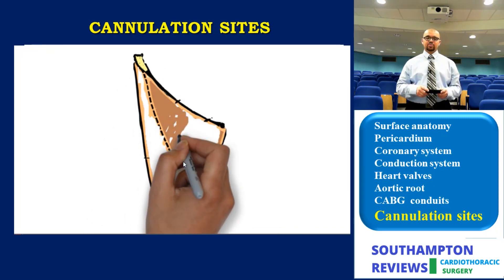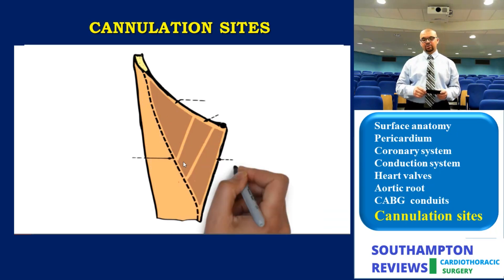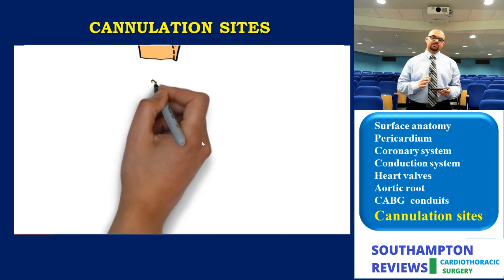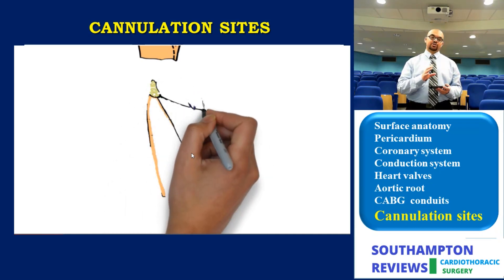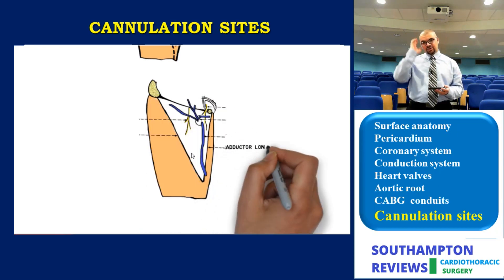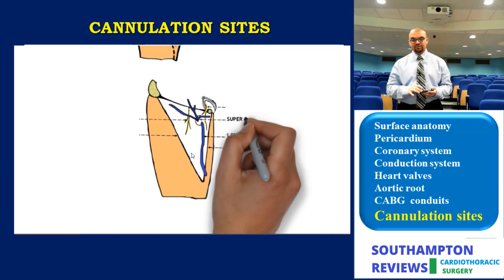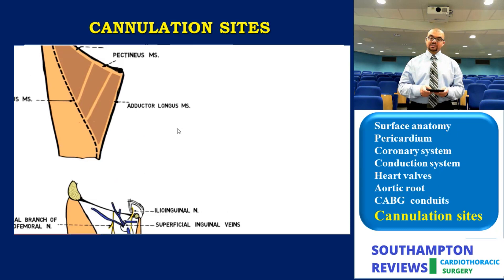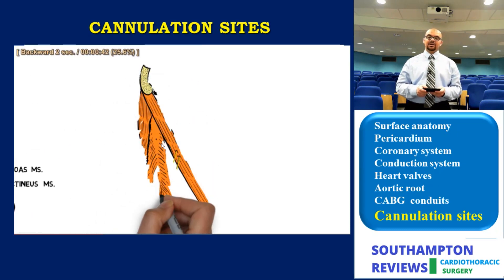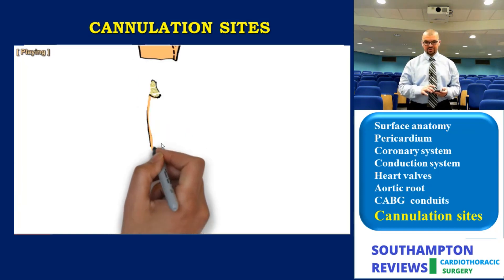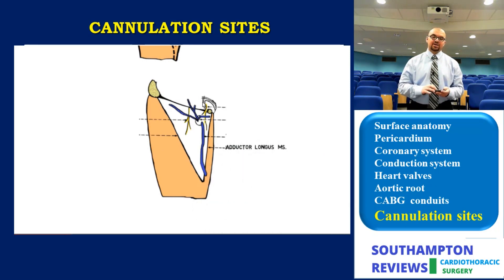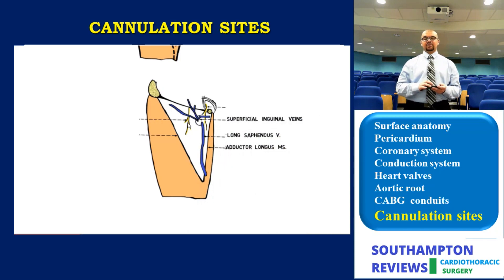Let's start in a chronological manner with femoral cannulation. First, we orient ourselves to the area — the femoral triangle. We all know sartorius and adductor longus; the muscle bed is the iliopsoas, pectineus, and adductor longus. Dissecting from superficial to deep, you will be faced with the saphenofemoral junction where the saphenous meets the femoral vein, the three superficial inguinal veins, and two cutaneous sensory nerves: the ilioinguinal nerve and the femoral branch of the genitofemoral nerve. Inadvertent injury to the ilioinguinal nerve leads to hypoesthesia or paresthesia along the inguinal region; injury to the femoral branch of the genitofemoral nerve leads to hypoesthesia or paresthesia over the front of the thigh.